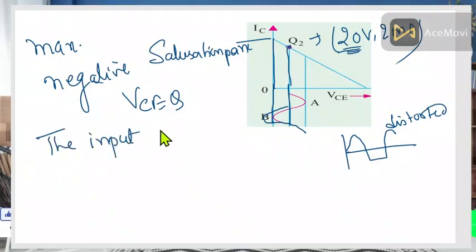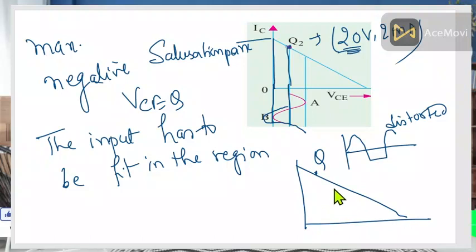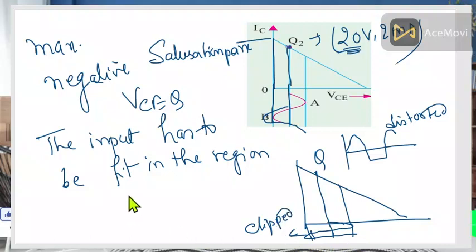The input AC has to fit within the available region on the load line. If the Q-point is here and this region is limited, then a portion of the AC will be clipped and the output will be of a distorted form — the upper part is okay but the lower part is removed. This is an improper or distorted signal. This is the significance of the Q-point — you must find it first before performing your experiment.